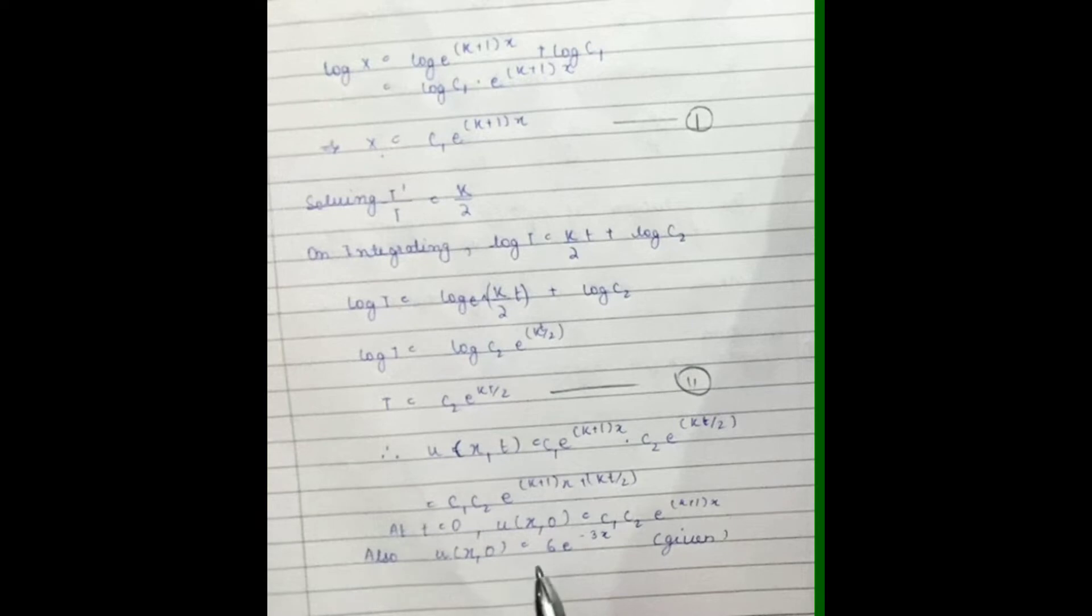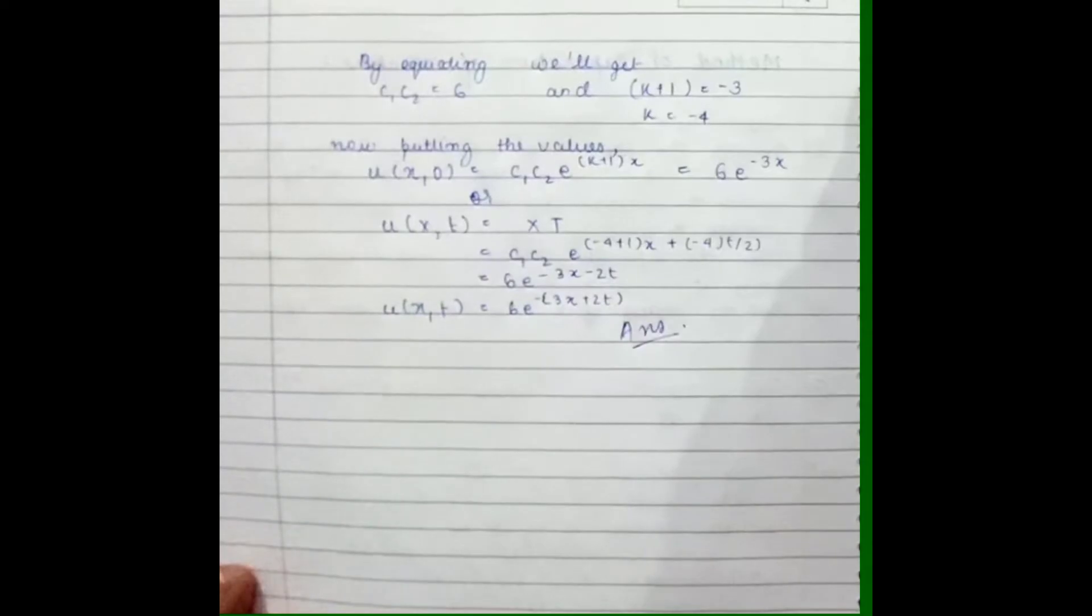So we will solve this and then we will get the answer. By equating both equations, we will get the value of c₁c₂ = 6 and k+1 = -3.